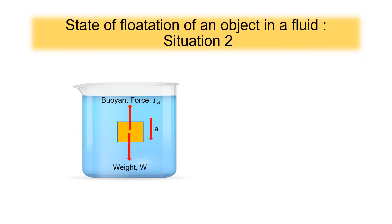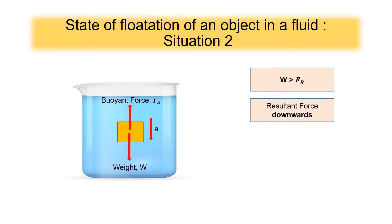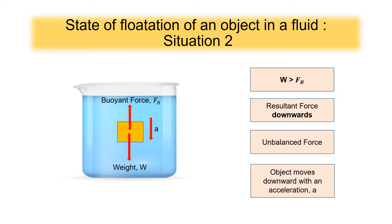Now let's take a look at situation 2. As you can see in the diagram, when you release the object in the water, it accelerates downward. This means that the weight of the object is greater than the buoyant force. Thus, the resultant force is downward, and the force is unbalanced because the object moves downward with an acceleration.